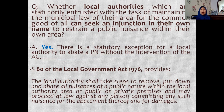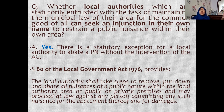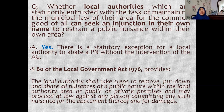Another question is whether local authorities, which are statutorily entrusted with the task of maintaining municipal law for the common good of all, can seek an injunction in their own name to restrain public nuisance within their area. The answer is yes — there is a statutory exception allowing a local authority to abate public nuisance without the intervention of the AG. This is provided under Section 80 of the Local Government Act 1976, which states that local authorities shall take steps to remove or put down such nuisance.